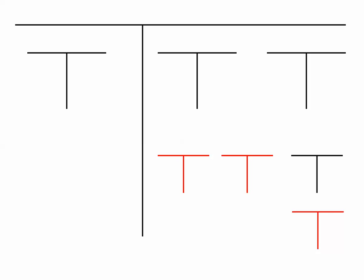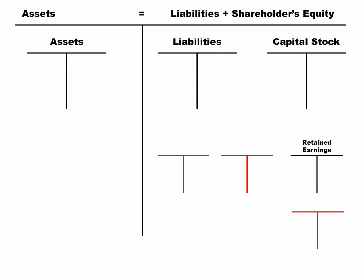So we've got the big T's and the little t's in front of us, and the first thing we need to remember is the accounting equation: assets equals liabilities plus shareholders' equity. Since we'll look mostly at corporations in this class, that's why we're going to talk about shareholders' equity. So assets over on the left side, liabilities, and then our two main equity accounts over on the right side.